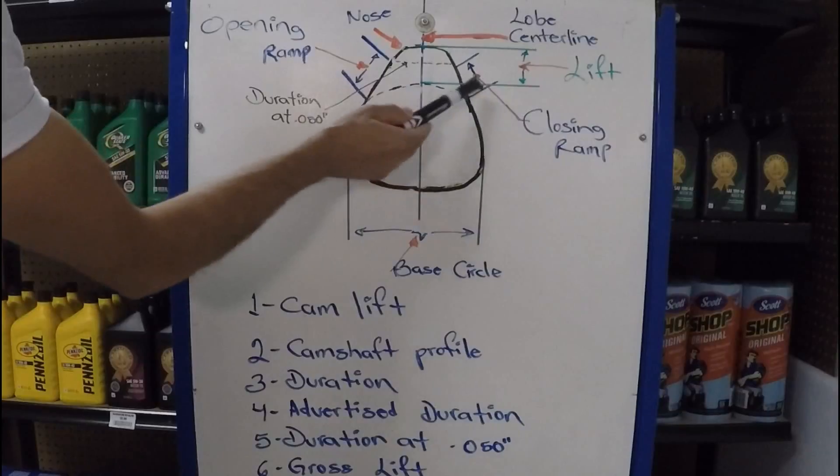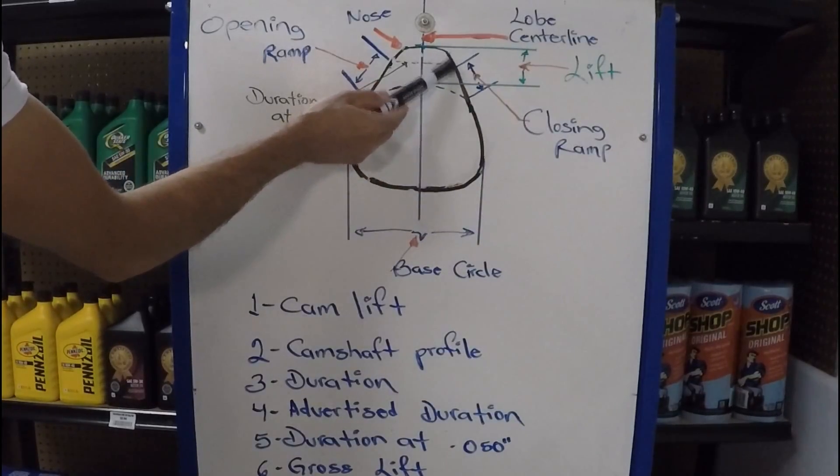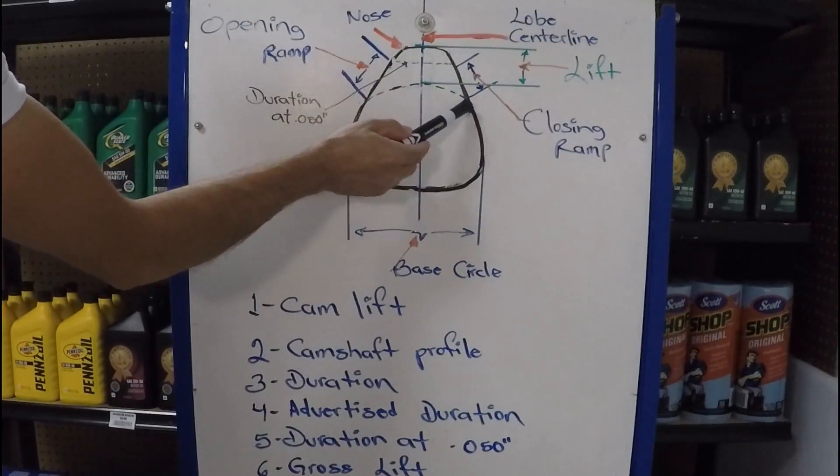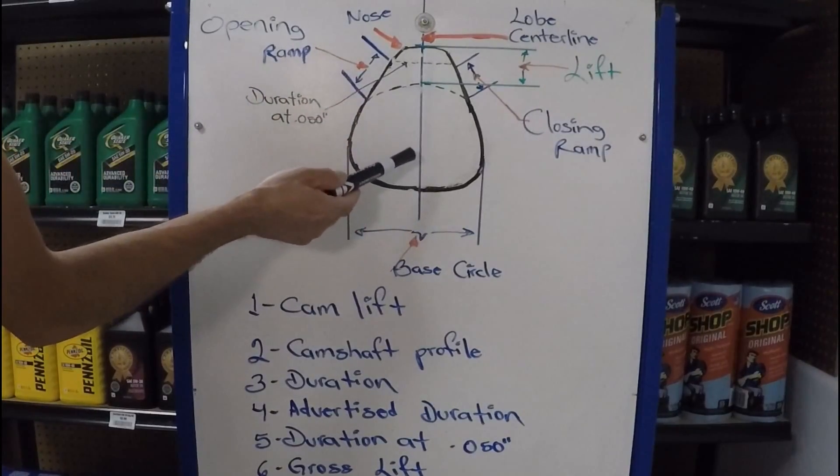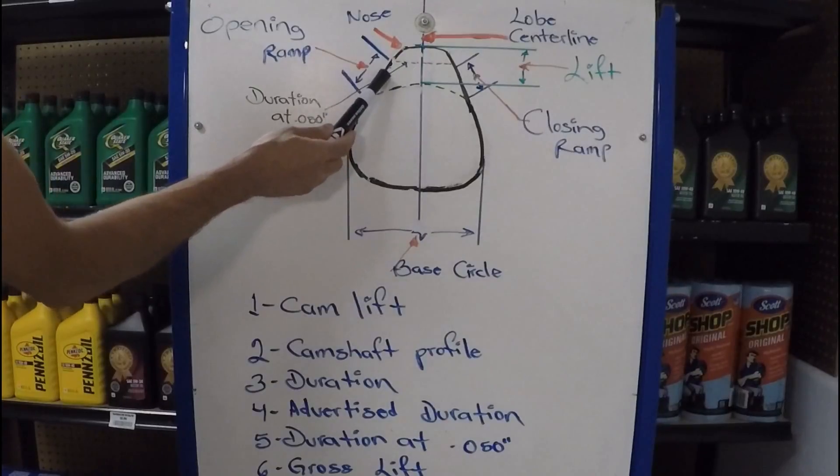And on the other side, you have the closing ramp because same scenario, right? As it turns and it comes back down, you have the center line right there. Self-explanatory, right at the center. Over here, we have a duration of 50 thousandths of an inch. I'll explain what that is in a second.